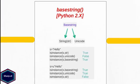The basestring function is only available in Python 2 and it is not possible to call this function directly. It is only used to check if an object is an instance of either the string or unicode class. basestring is the parent class of both string and unicode classes in Python 2.